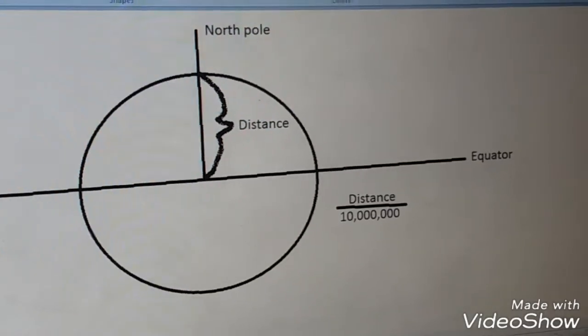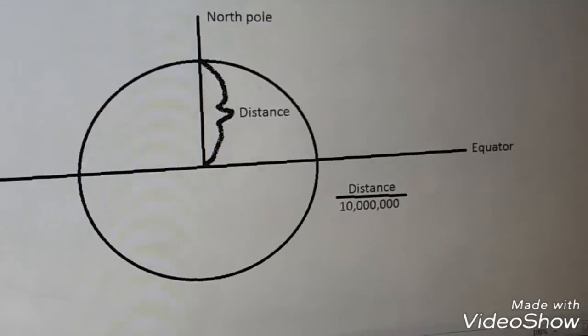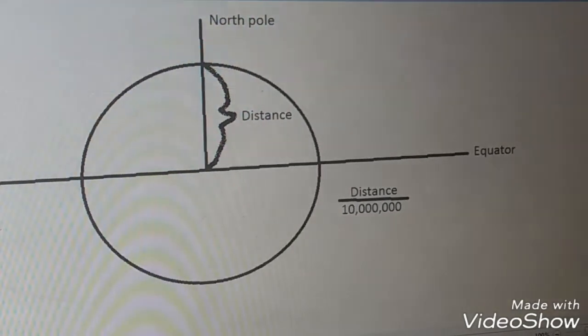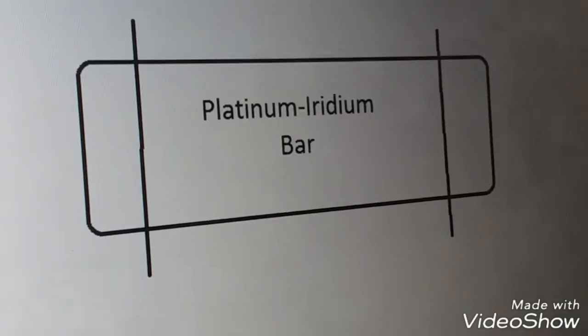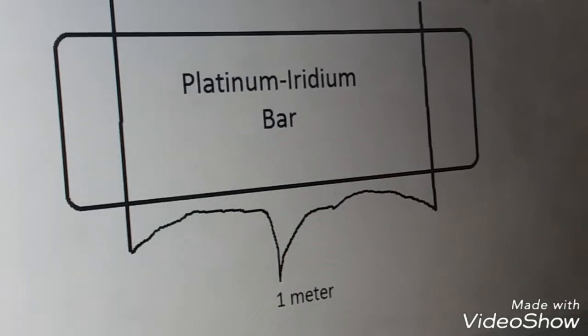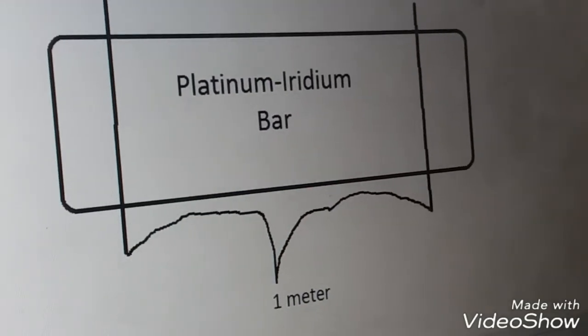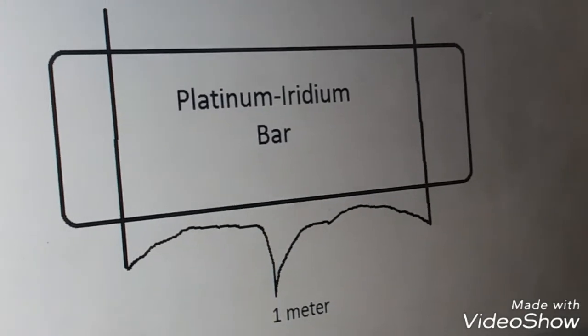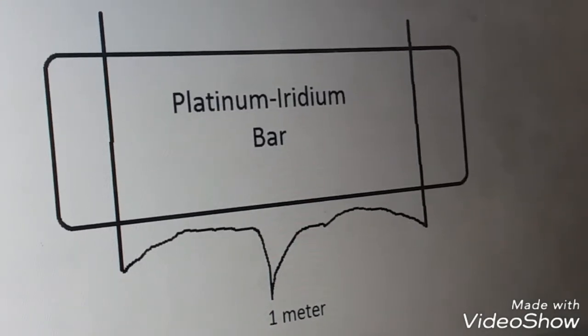Later, for practical reasons, this earth standard was abandoned and the meter came to be defined as the distance between two fine lines engraved near the ends of a platinum-iridium bar, the standard meter bar, which was kept at the International Bureau of Weights and Measures near Paris. Accurate copies of the bar were sent to standardizing laboratories throughout the world.